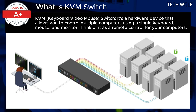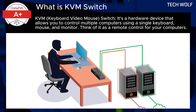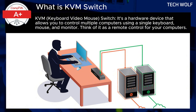Another example is home labs. If you have a home lab with multiple computers, a KVM switch can make it easier to manage and control them from one set of keyboard, monitor, and mouse. Here are the main benefits of using a KVM switch. Firstly, it reduces the clutter — you can eliminate the need for multiple keyboards, mice, and monitors.